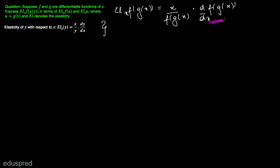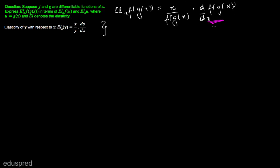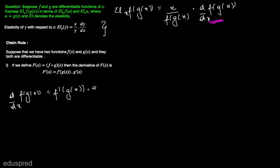Now let's first solve this derivative expression using the chain rule, which says that suppose there are two functions f(x) and g(x) and they are both differentiable. If we define a composite function F(x) which is f(g(x)) and differentiate it with respect to x, it is equal to f prime of g(x) multiplied by g prime of x.